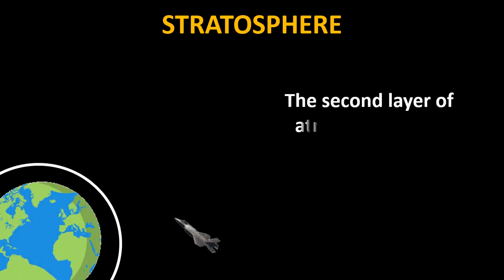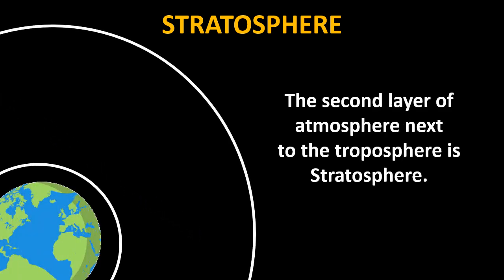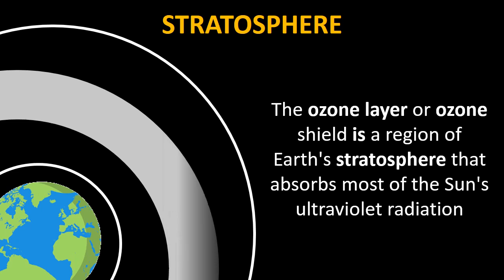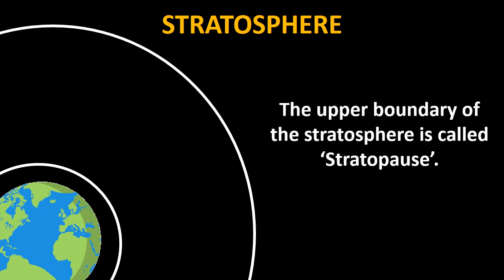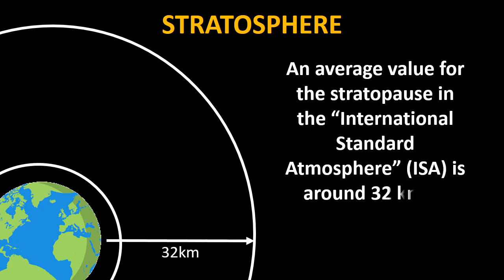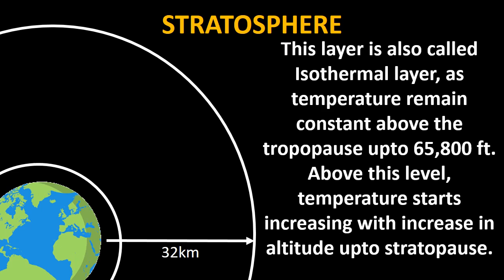The second layer of the atmosphere next to the troposphere is called the stratosphere. The ozone layer also exists in the stratosphere. The ozone layer is a region of earth's stratosphere that absorbs most of the sun's ultraviolet radiations. The upper boundary of the stratosphere is called the stratopause, and its average value in the international standard atmosphere is around 32 kilometers or 105,000 feet. This layer is also called the isothermal layer, as temperature remains constant above the tropopause up to 65,800 feet. Above this level, temperature starts increasing with increase in altitude up to the stratopause.